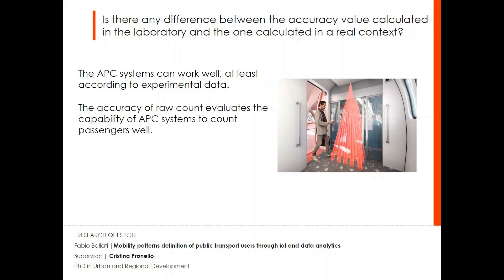Usually, before using APC data, it is evaluated for accuracy. It refers to error in the measurement and it evaluates the capability of an APC system to count passengers correctly. In general, studies revealed that if any discrepancies exist between manual counting and APC, they were very often not similar.